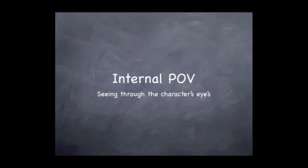An internal POV is one of the most powerful shots you can shoot. Basically, we're seeing through the character's eyes. We are put inside the character's head, looking outside their eyes. A lot of times you'll see somebody put a mask on, and what they're basically doing is putting the mask over the camera, and the camera operator becomes that character. Then we cut to seeing the character wearing the mask, and then we cut back and we can see through their eyes. It's very powerful.